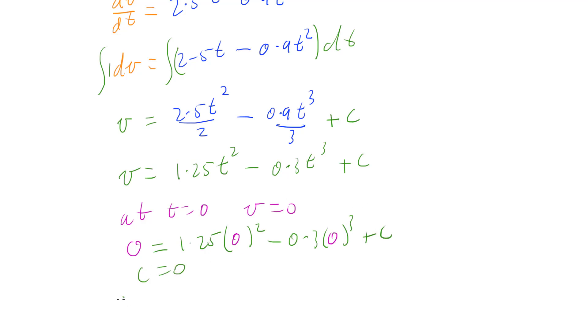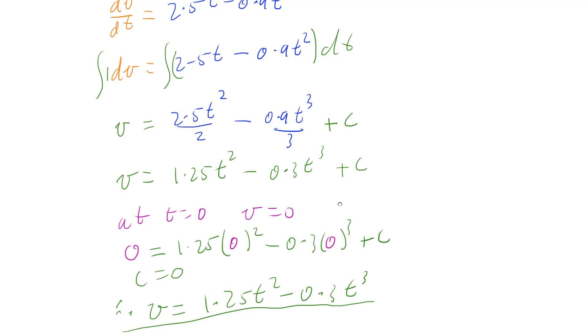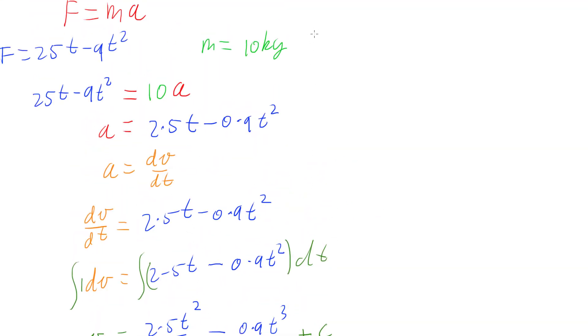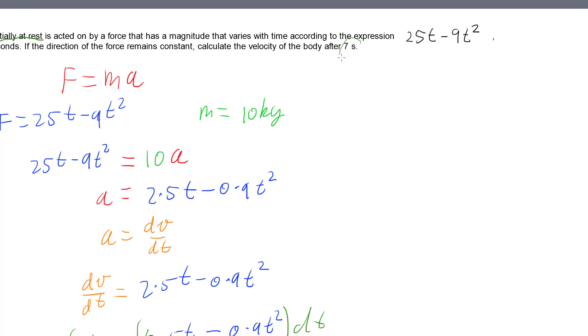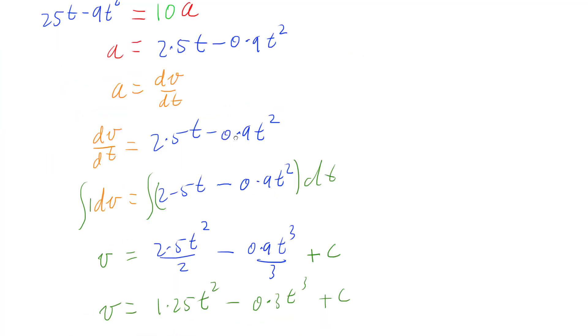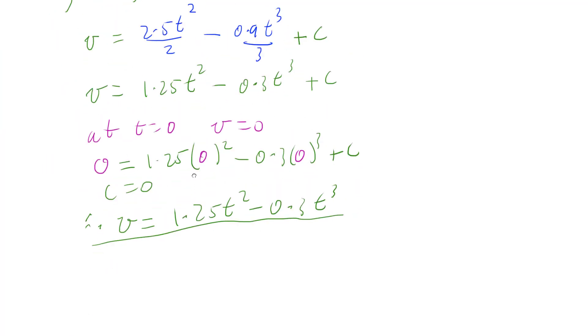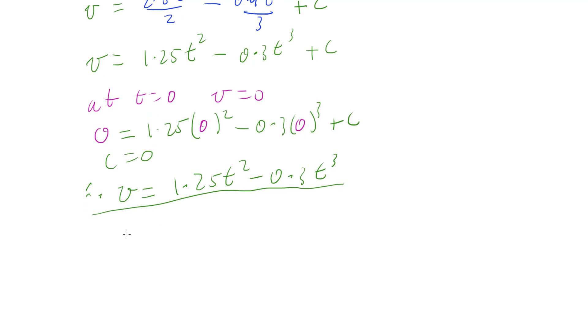So that means that our velocity equation is just 1.25t squared minus 0.3t cubed. So that's our equation for velocity. And so now we want to know what is the velocity after 7 seconds. So that means that we need to find out at time equals 7. So at t equals 7, we want to know what is velocity.